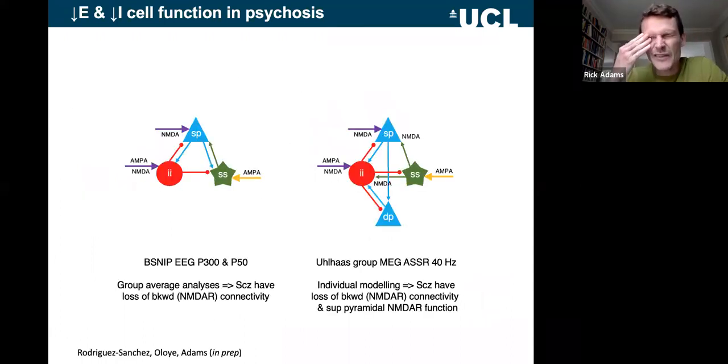And in very preliminary work that has been conducted by some of my students, Hope and Julia, we're beginning to see evidence that if you use these conductance-based models, we do see still NMDA receptor-mediated effects in patients. So in this large B-SNIP dataset of P300 and P50 EEG paradigms, we're seeing that the patients seem to have a loss of this NMDA receptor-mediated backward connectivity. And in data from Peter Uhlhaas's group, this auditory steady state task, again, we see more evidence of NMDA receptor-mediated loss in the patients, especially on superficial pyramidal cells. But this is all super preliminary, so nowhere near publication yet.